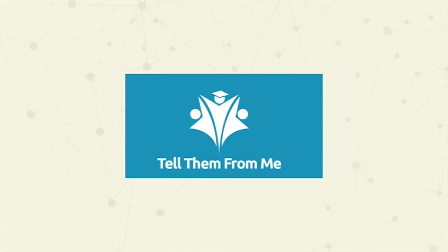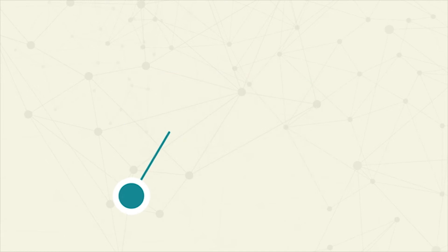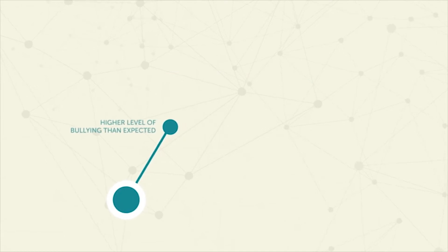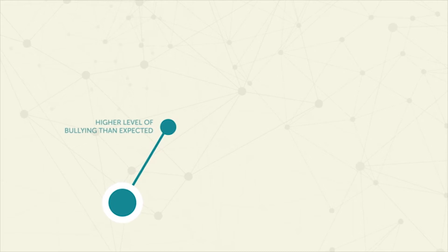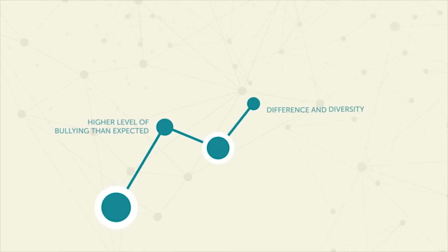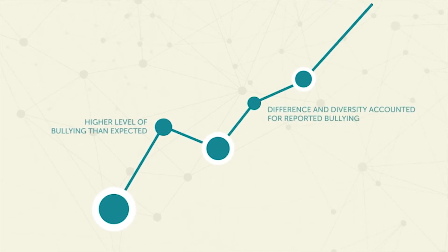Imagine if the results of the Tell Them From Me student survey at your school indicated that students were reporting a higher level of bullying than expected. The school's learning support and wellbeing teams indicate an increase in bullying related to difference and diversity. Your school data shows high level diversity within your school, across cultures, religion, gender, sexuality and socio-economic status.